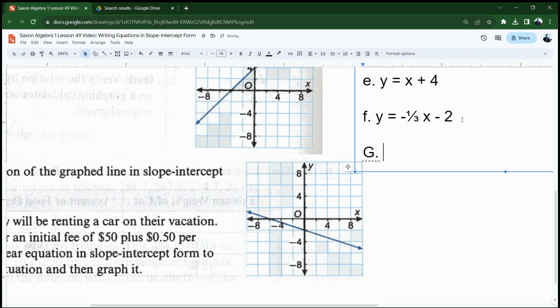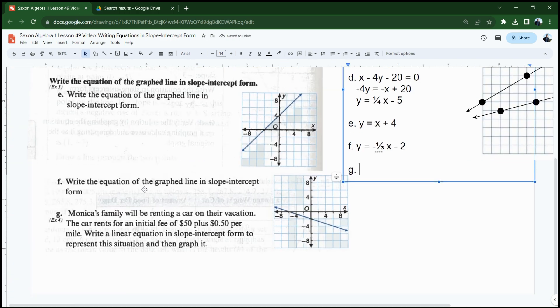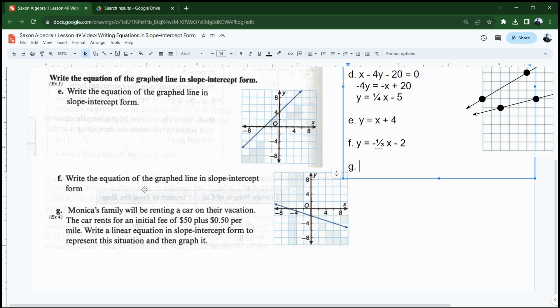All right, and then lastly, we're going to be solving this problem that's a real problem. And what we're looking for in these real problems is any kind of rate. The rate is going to be my slope. Okay, let's take a look and see if we can find a rate. Monica's family will be renting a car on their vacation. The car rents for an initial fee of $50 plus 50 cents per mile. 50 cents per mile is going to be a rate. So our slope is going to be 0.5 or 1 half, which is up 1 over 2. Up 1 over 2. Write a linear equation in slope intercept form to represent the situation and then graph it.